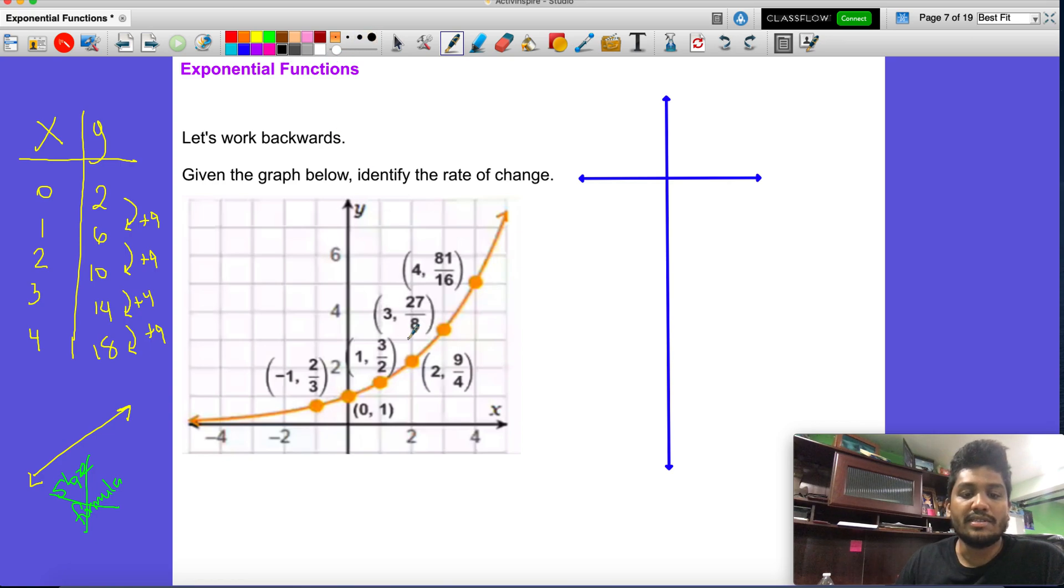Let's see what are some points that we could write down. So let's start all the way from the left hand side. So negative 1 - this is our x and our y's. From negative 1 comma 2/3, then we have 0 comma 1, 1 comma 3/2, 2 comma 9/4. We're not going to write them all down. 3 and 27/8.